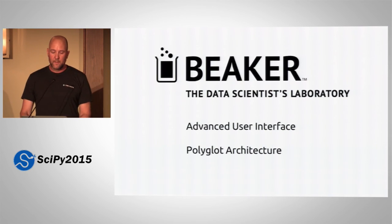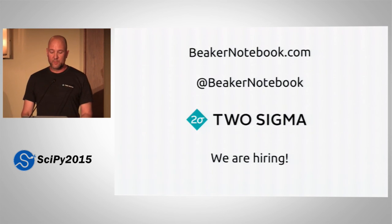So, to review, Beaker is designed to allow data scientists to explore and do their research and it has an advanced user interface with a polyglot architecture so that you can focus on your data and your science instead of being distracted or frustrated by your tools. And Beaker Notebook is open source. It's on GitHub. We have a website. There's a Twitter handle if you want to follow our updates. And it's being developed at Two Sigma. And we are trying to grow the team. So if anybody here wants to join us, please let me know. Thank you very much. And I'll take questions if there's time.